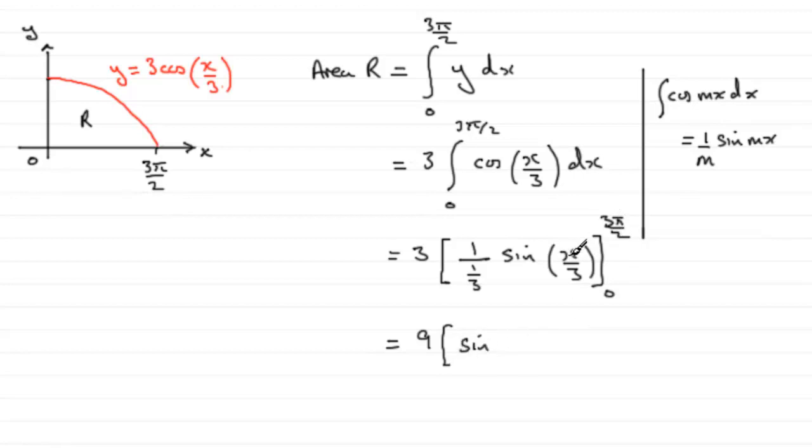So that's just going to be the sine of 3π/6, or π/2. Then minus, substitute 0 in for x, and that's going to be minus the sine of 0/3, or 0.